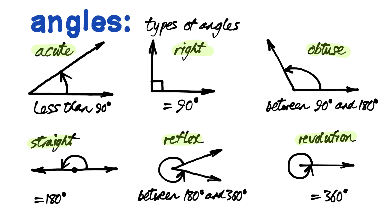Now angles are also named by their types. So here we have an acute angle that's less than 90 degrees. We have a right angle when it is exactly 90. We have an obtuse angle when it is between 90 and 180. A straight angle when it's exactly 180. Reflex angles are between 180 and 360. And a revolution is a full 360 degrees.